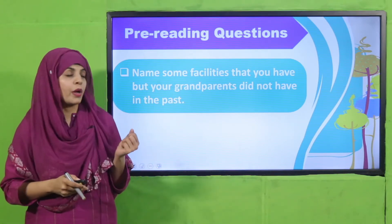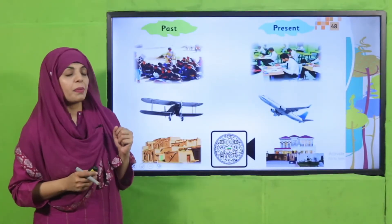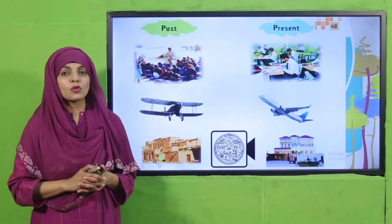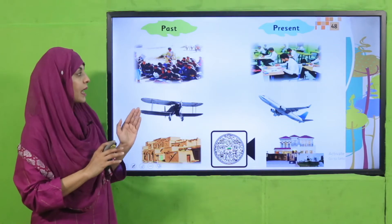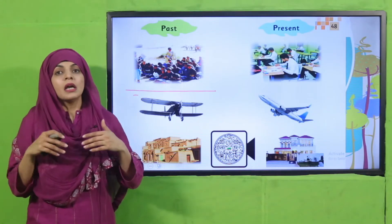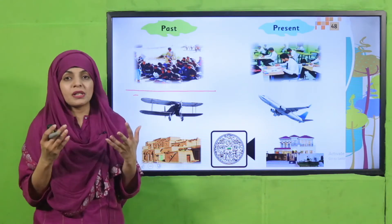Now quickly open page number 48 in your GK3 books. Look at the pictures — on one side are pictures from the past and on the other side pictures from the present. Let's compare them. If we talk about schools first, in older times the education system was not much developed. People didn't go to school, and if there were schools they were very far away, and basic facilities like chairs, tables, fans, and blackboards were not present.